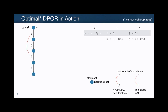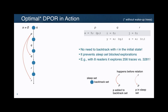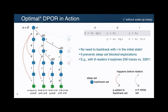This is where the optimal DPOR algorithm improves. The optimal DPOR algorithm is able to notice here, at this dependency, that there is no need to add R at the top state to backtrack, because whatever you are going to do starting with the first step of R, you can also do starting with the first step of Q. So this algorithm is able to avoid exploring the rightmost path of this tree.